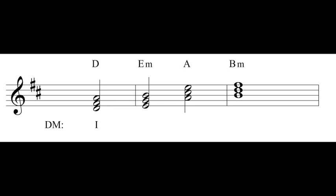What about the next chord? I ask myself: what is the root, and what scale degree is that root? This is an E minor triad — the root is E, and in the D major scale, E is scale degree 2, the supertonic. So I use Roman numeral ii, lowercase because it is a minor triad. Because we're in root position, there is no bass position symbol — which is the root position convention.